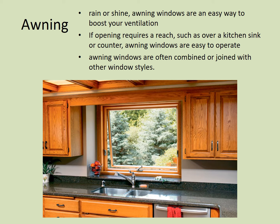Next we have the awning window, which is good for rain or shine. They open from the bottom and allow ventilation to come in while keeping rain out of your home even with the window open. Like the casement window, they're easy to operate when reaching over a kitchen sink or counter. They are often combined or joined with other window styles — you may see them paired with picture windows or other types.